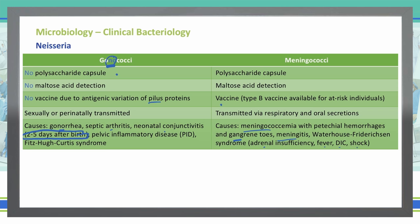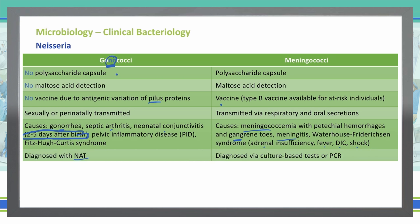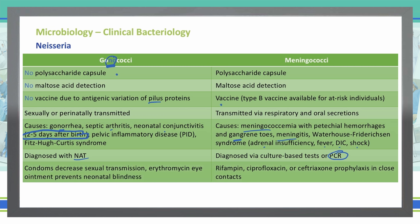To diagnose gonococcal infections, we use the NAT — the Nucleic Acid Amplification Test — which helps us determine if we see the genetic material of the gonorrhea bacteria, giving us a positive or negative diagnosis. Meningococci is diagnosed by a culture from the actual fluid or by PCR. If we're talking about meningitis, we have to gain access to that particular fluid, so we're going to have to do something like a lumbar puncture.